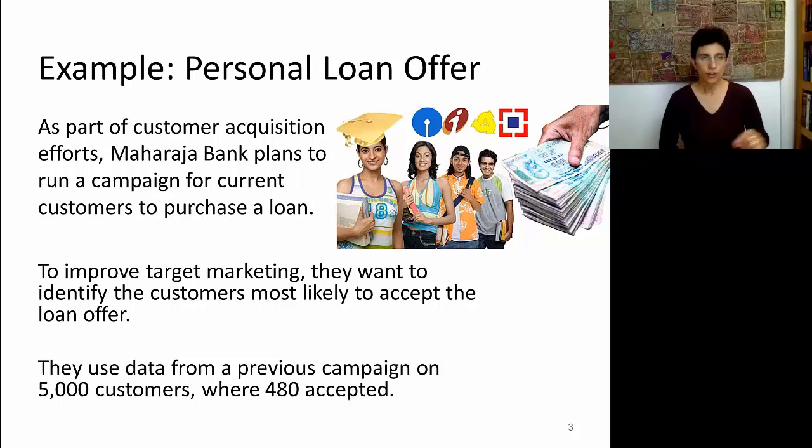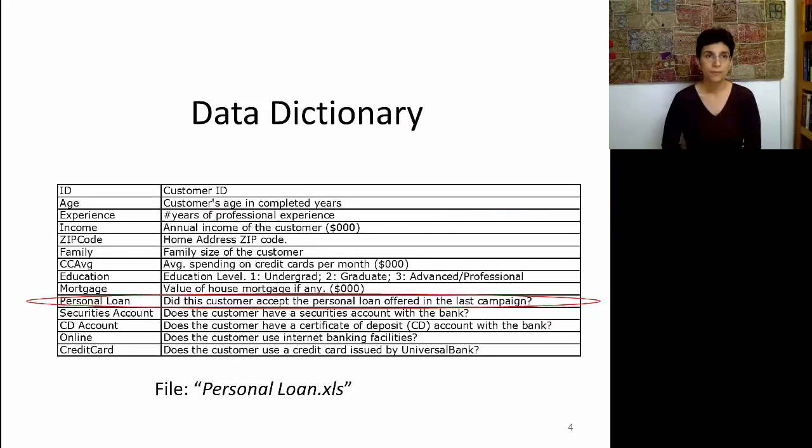Now let's go back to the story. The bank uses data from a previous campaign on 5,000 customers, where 480 accepted the offer. So again, they sent out the mailing to 5,000 customers, and out of these 5,000 customers, 480 accepted. There's a data set associated with this case, and we'll see it later on. You'll notice that we have a column called Personal Loan, which is simply a binary outcome, whether the person accepted or did not accept the offer. There are also a bunch of other input variables that we might consider including in our model. But for now, we're only concentrating on this column, Personal Loan. That's all the information that we have in order to compute the Naive Rule.